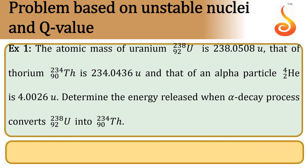Example 1. The atomic mass of uranium-92-238 is 238.0508 atomic mass units. That of thorium-90-234 is 234.0436 atomic mass units, and that of an alpha particle helium-2-4 is 4.0026 atomic mass units. Determine the energy released when alpha decay converts uranium-92-238 into thorium-90-234.